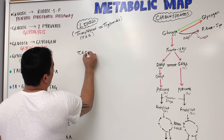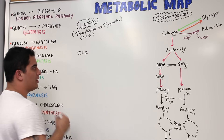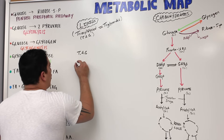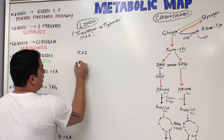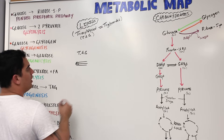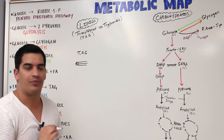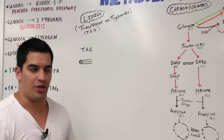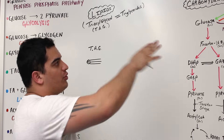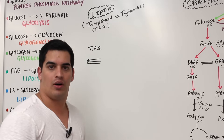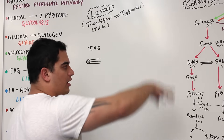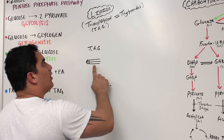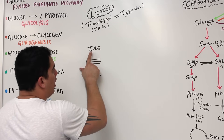Let me draw a quick raw diagram of TAG — a triacylglycerol — which is made up of two components. Let's say we're in the fasting state: we haven't eaten for a while, we need energy, and we've already used up our carbohydrate sources — broken down glycogen, done glycolysis, the transition reaction, Krebs cycle, and electron transport chain. Now we need to move on to our second source of energy: lipids.